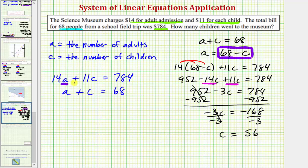The next step, we want to find the value of A. Now that we know that C equals 56, we also know A equals 68 minus C. So we can say A equals 68 minus 56, and C equals 56. So A equals 12.